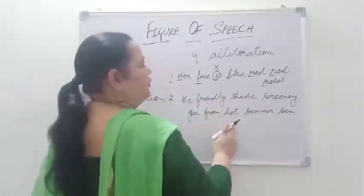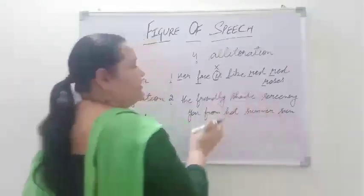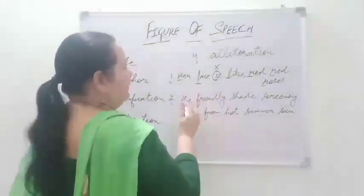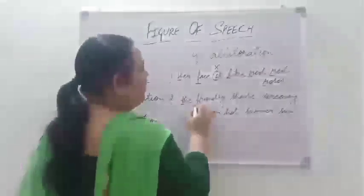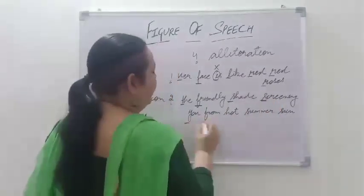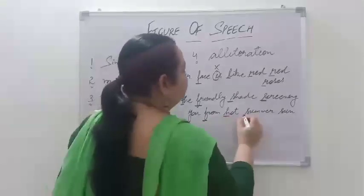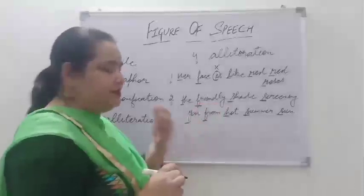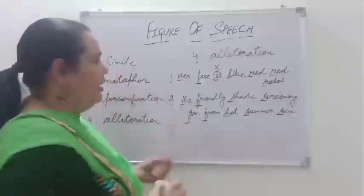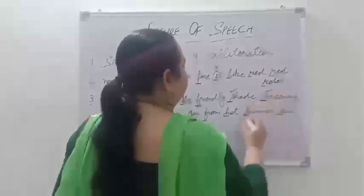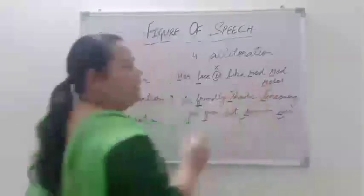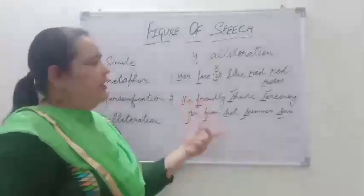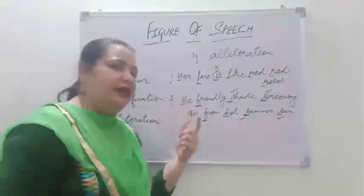Now come to a second example: 'The friendly shade screening you from the hot summer sun.' This is an example from our poem, that is 'Prayer of the Woods.' There is no vowel sound — all are consonants. This is an example of alliteration.